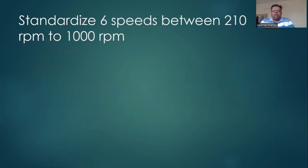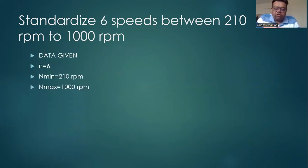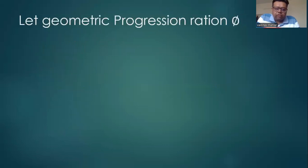The problem is to standardize 6 speeds between 210 rpm to 1000 rpm. The data given is n equals 6, minimum is 210 rpm, and maximum is 1000 rpm. We need to find out the geometric progression ratio.